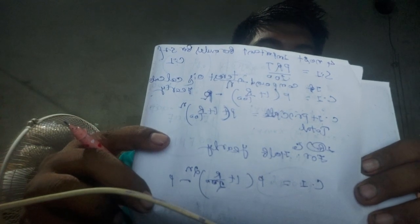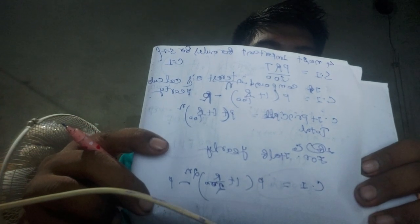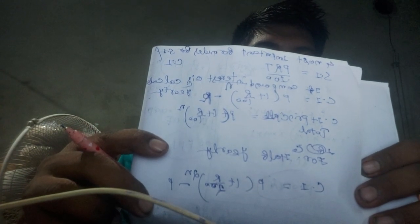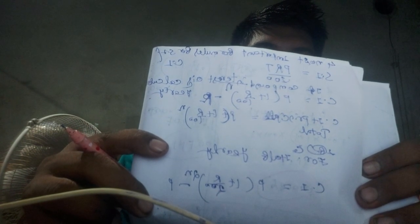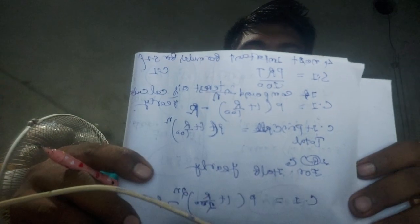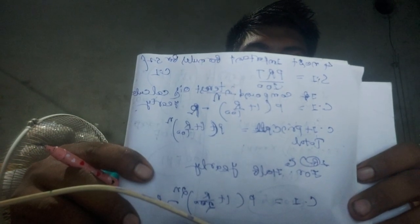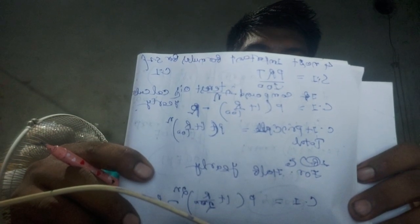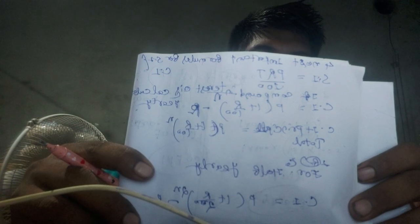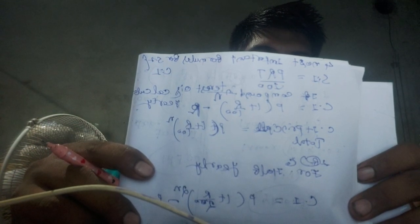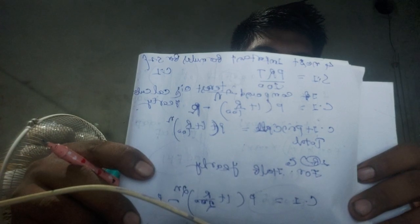The third formula is for half-yearly Compound Interest. If you want to calculate Compound Interest half-yearly, then the formula is P into 1 plus R by 200 to the power 2N, minus P. The 100 becomes 200 and the power becomes twice the time N.